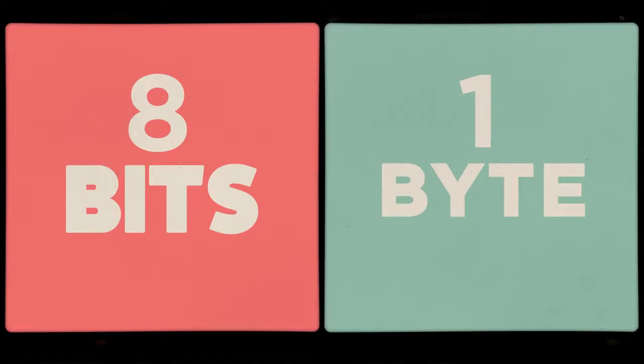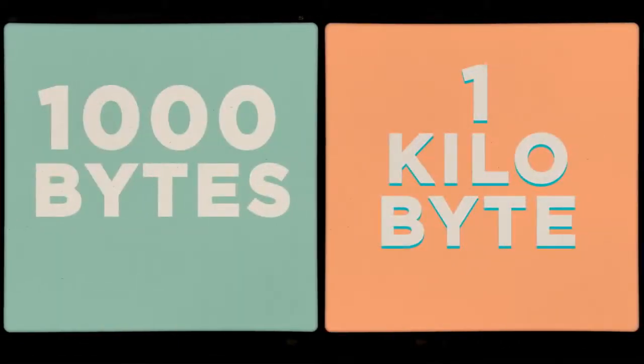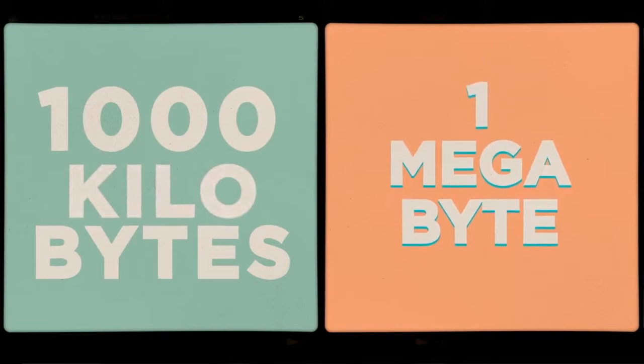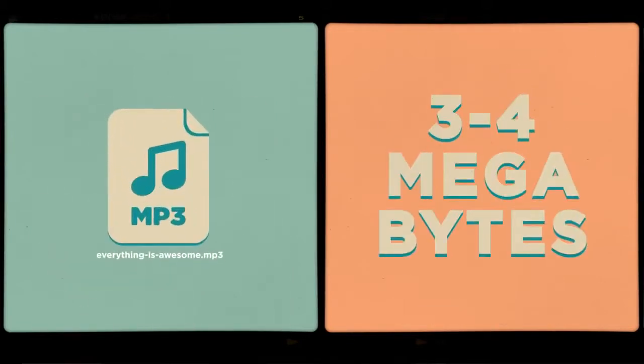Eight bits strung together makes one byte. 1,000 bytes all together is a kilobyte. 1,000 kilobytes is a megabyte. A song is typically encoded using about three to four megabytes.